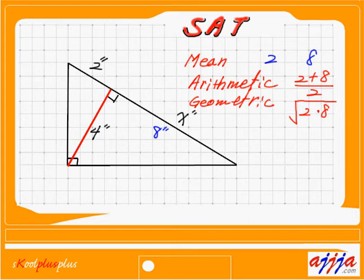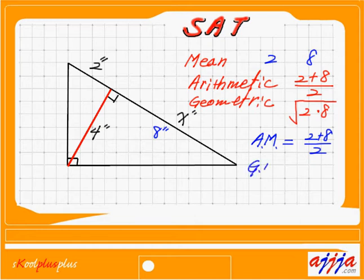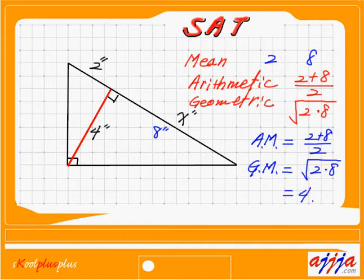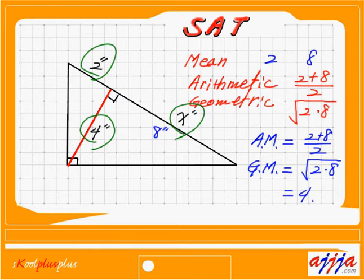See the difference? AM — arithmetic mean — equals (2 + 8) ÷ 2. GM — geometric mean — equals square root of (2 × 8), which is square root of 16, which is 4. That means you can remember this: we have a right triangle with a segment right in the middle, and that segment equals the geometric mean of these two numbers — 2 and 8. So 2 times 8 = 16, and the geometric mean is 4.